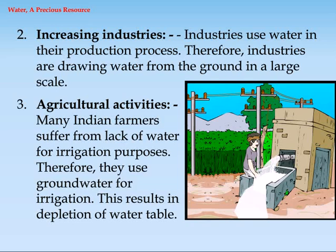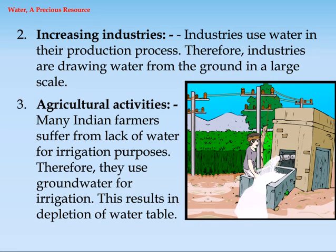2. Increasing industries. Industries use water in their production process. Therefore, industries are drawing water from the ground on a large scale. 3. Agricultural activities. Many Indian farmers suffer from lack of water for irrigation purposes. Therefore, they use ground water for irrigation. This results in depletion of the water table.